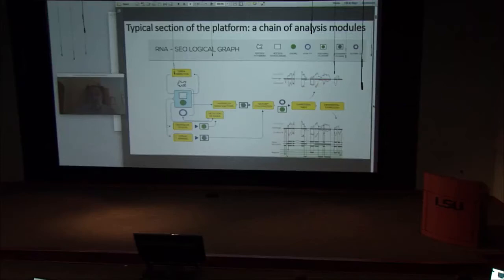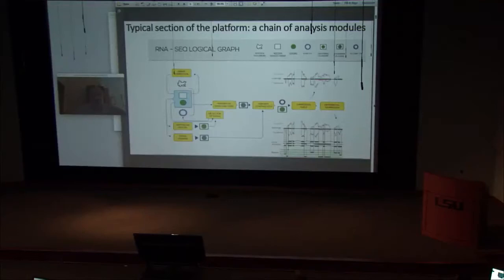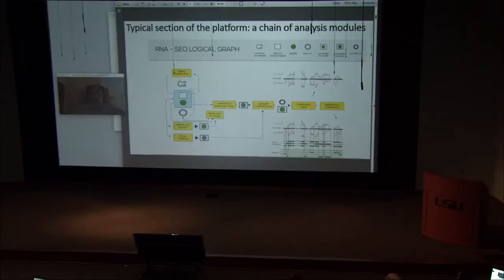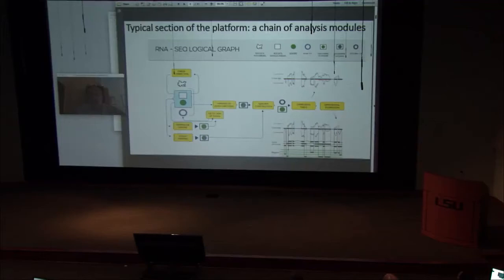This is a logical scheme of a particular analysis — in this case RNA-seq. First you have raw data, after that you clean it for PCR artifacts and errors if possible. After that, detection of exons probably not defined in the GTF file, detection of exon junctions based on mapping, and isoform construction. After that, a table of expression for isoforms and genes, isoform splice variants, more biologically meaningful things, and differential expression.